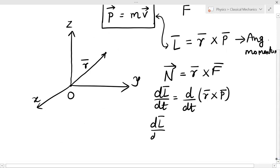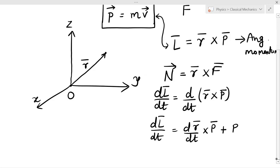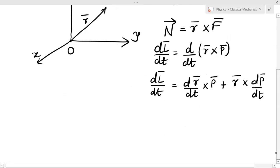What is this? dL̄/dt = dr̄/dt × P̄. I am applying the chain rule. This is r̄ × dP̄/dt.